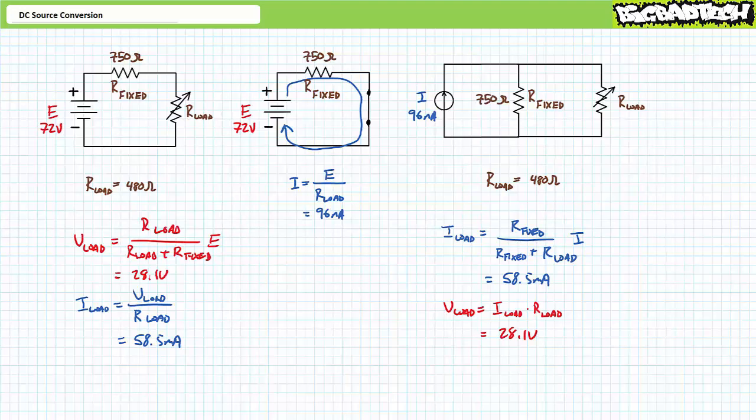Again, note when performing source conversion, it's important to maintain original polarity. Note that the voltage source positive terminal is pointing up as is the current source's directional arrow. By respecting polarity and direction, this ensures that the variable load resistance experiences the same direction of current flow for both configurations.